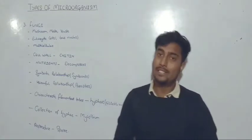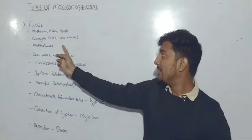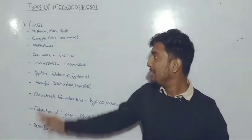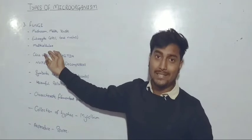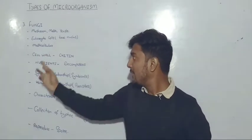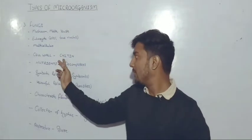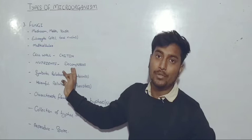Fungi are made from eukaryotic cells, meaning cells with a nucleus. These are multicellular. The cell wall is made of chitin. Fungi help by decomposition.